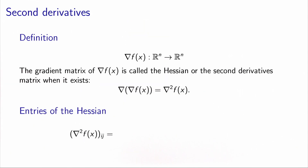So the first derivatives were characterized by a vector that we call the gradient, and that we denoted by nabla f. It's actually a function that takes x, a vector of R^n, and maps it into another vector of R^n. So it's a function that takes n variables and returns n functions.